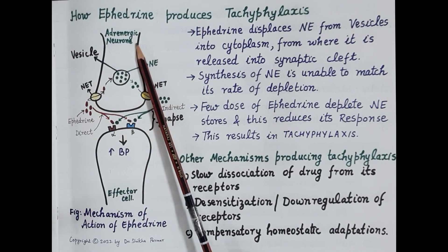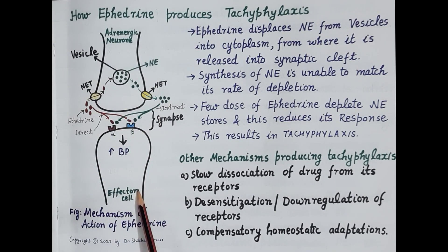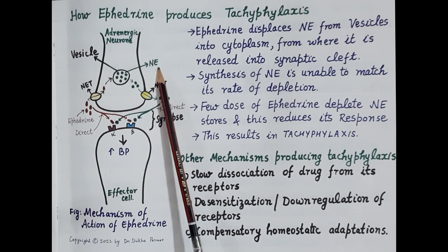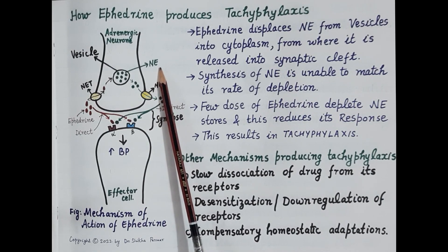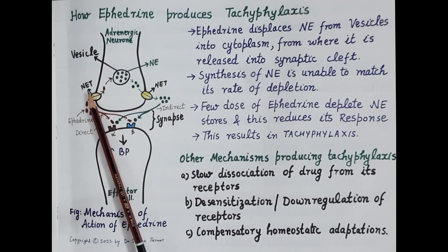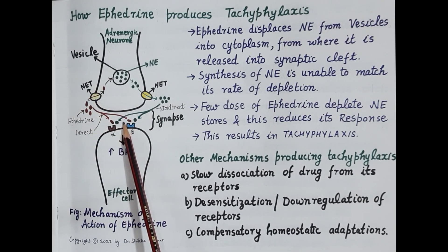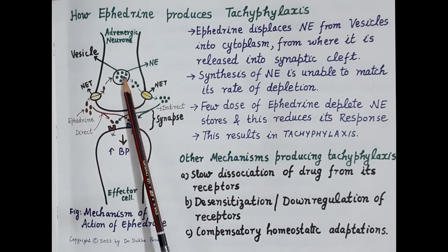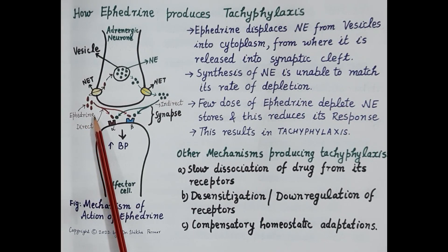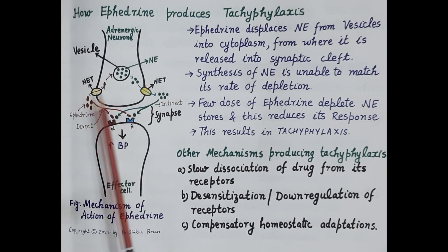This is a pre-synaptic adrenergic neuron, and this is the effector cell where norepinephrine (NE) produces its effect. This structure is a vesicle where norepinephrine is stored. Norepinephrine is a catecholamine; it increases blood pressure primarily by acting on blood vessels and cardiac tissue. NET refers to norepinephrine transporters, which transport norepinephrine from the synapse to the adrenergic neuron and from the adrenergic neuron to the synapse.